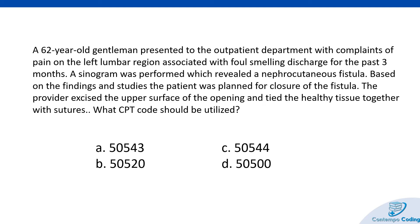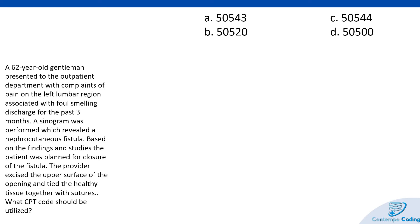Now let's get into a couple of case studies. A 62-year-old gentleman presented to the outpatient department with complaints of pain in the left lumbar region associated with foul-smelling discharge for the past three months. A synogram was performed which revealed a nephrocutaneous fistula. Based on the findings, the patient was planned for a closure of the fistula. The provider excised the upper surface of the openings and tied the healthy tissue together with sutures. What CPT code should be utilized? So they sutured it together — closure of the fistula, which is consistent with closing the fistula.